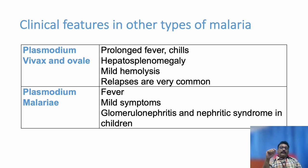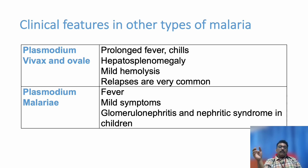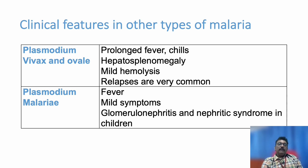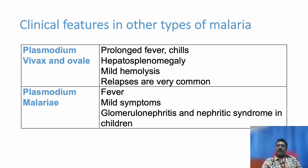Clinical features differ slightly in different infections. Plasmodium vivax and ovale show prolonged fever, chills, hepatosplenomegaly, mild hemolysis, and relapse — hypnozoites are very common in this type. Plasmodium malaria shows fever, mild symptoms, glomerulonephritis, and nephrotic syndrome. In falciparum malaria, the maximum symptoms are seen, mainly due to cytoadherence, vascular leak, and infection of all types of RBCs.